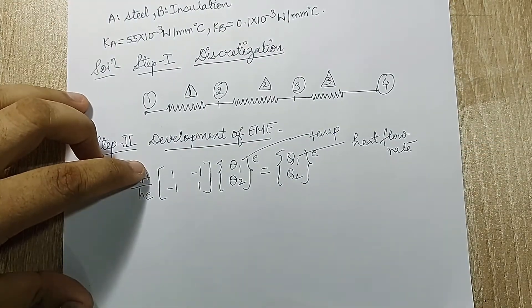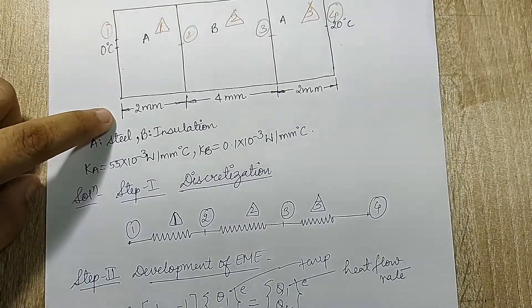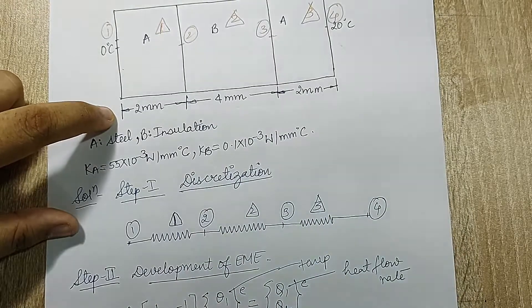k is thermal conductivity, A is the cross section area of the wall, and h_e is the thickness of the wall, that's 2mm, 4mm, and 2mm respectively.